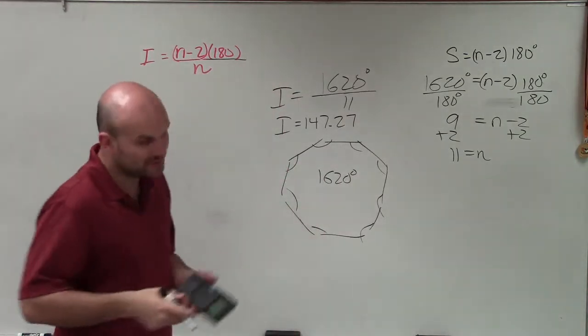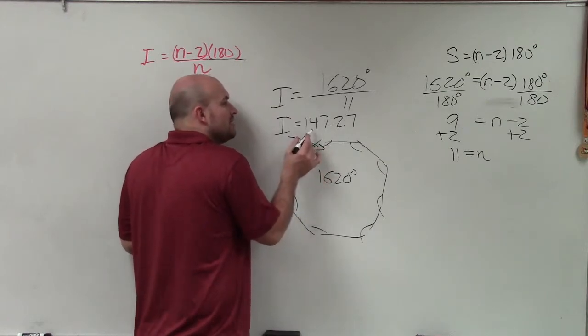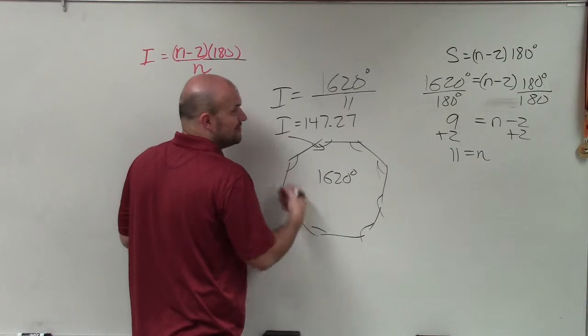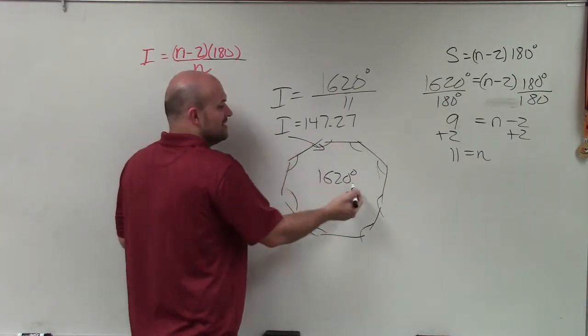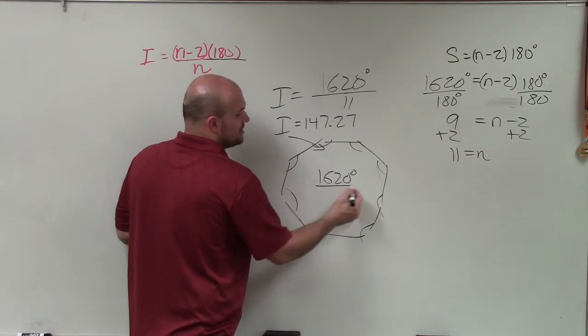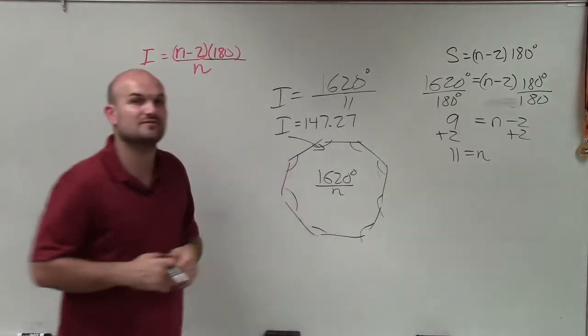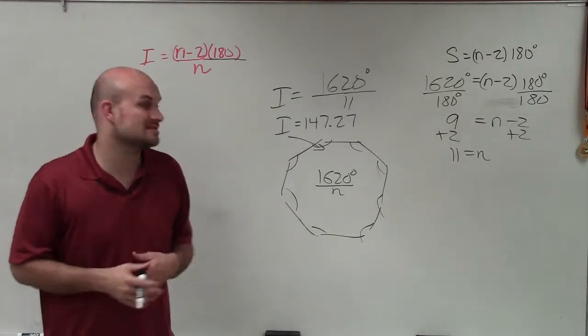So what that pretty much is telling us is that the measure of each one of these individual angles would be 147.27. Again, these are supposed to show 11-gon, right? Having 11 sides. I know I'm a little off on that, but I was just trying to estimate. So if you have the sum, just take your sum, divide it by n, and that will tell you what the measure of each individual angle is. Since it's regular, all the sides and all the angles are exactly the same.